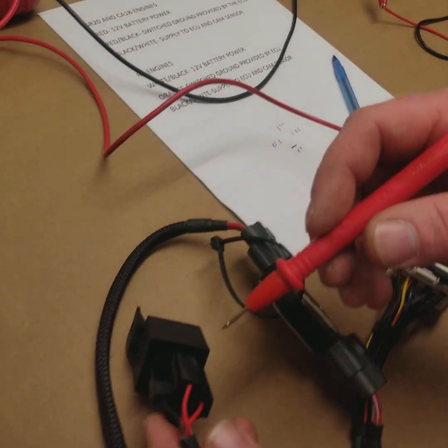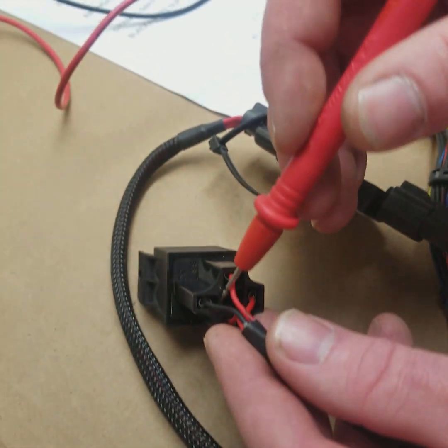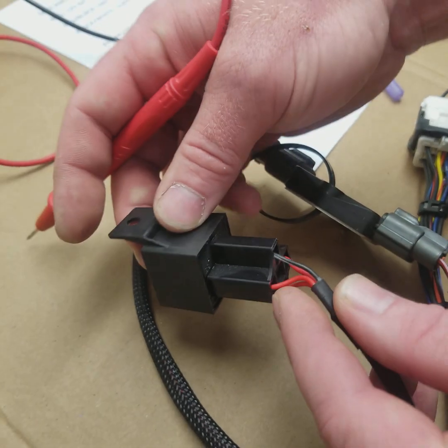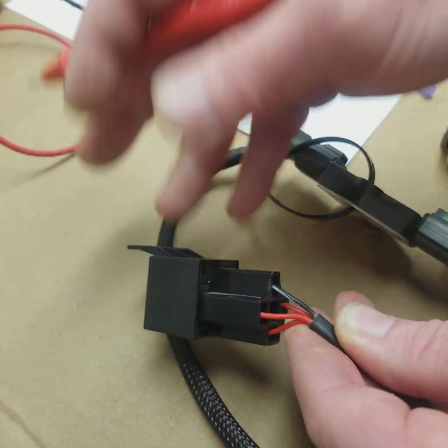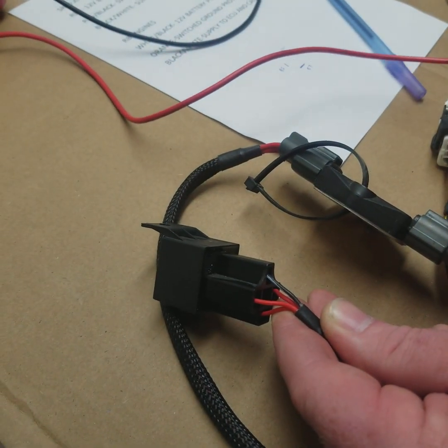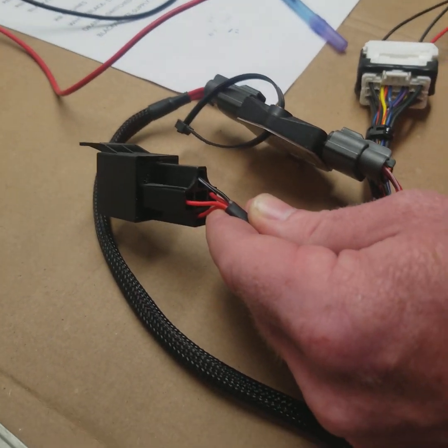So now 87 is going to power 30, which is this black wire with a white tracer. And that is going to power on items in the harness like your idle valve, your cam angle sensor, and it also supplies secondary power to the ECU.